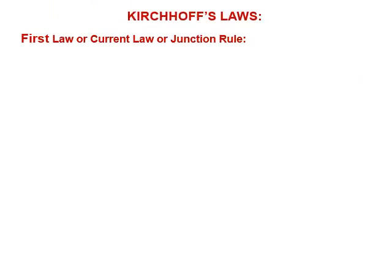Before we move to Kirchhoff's law, you must know about some terms. The term electric network is used for a complicated system of electrical conductors. Any point in an electric circuit where two or more conductors are joined together is called a junction. Any closed conducting part in an electric network is called a Loop or a Mesh. A branch is any part of the network that lies between two junctions.